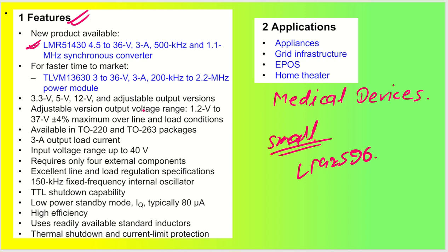Coming back to this IC, we have 3.3V, 5V, and 12V fixed versions as well as an adjustable output voltage option. We will design for 3.3V, 5V, 12V, and also adjustable — where we'll design a 15V rating. The adjustable output voltage range goes from 1.2V up to 37V with ±4% accuracy. The IC has a fixed frequency of 150 kHz, so you don't need any external frequency-setting resistor.